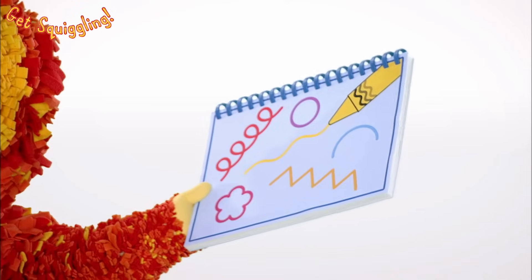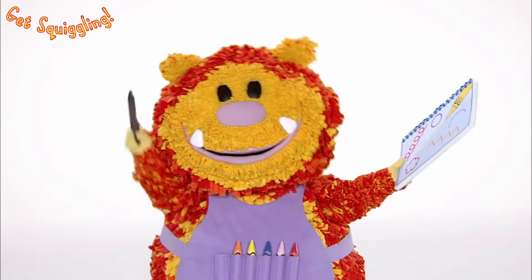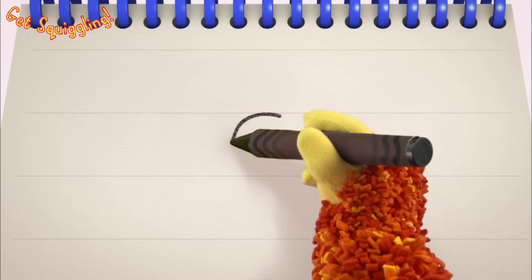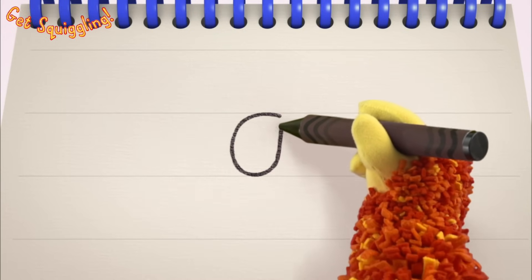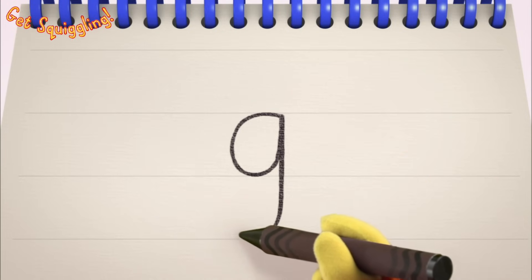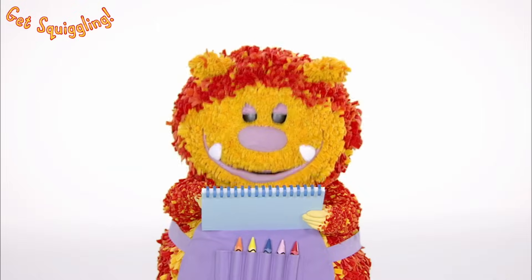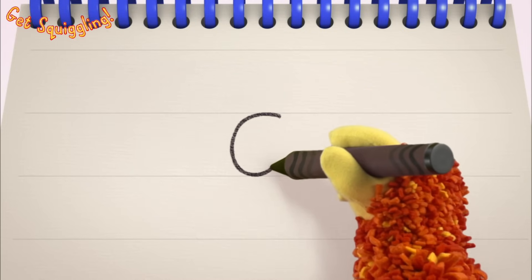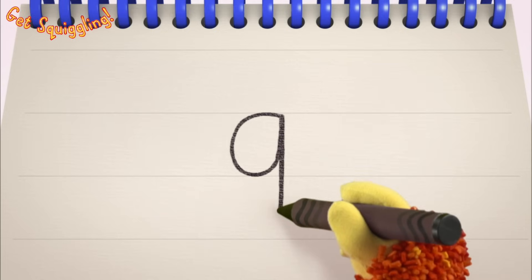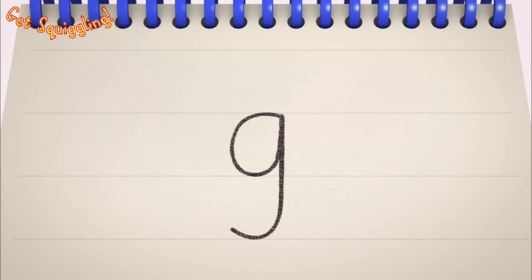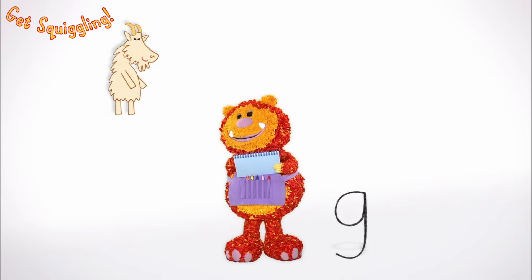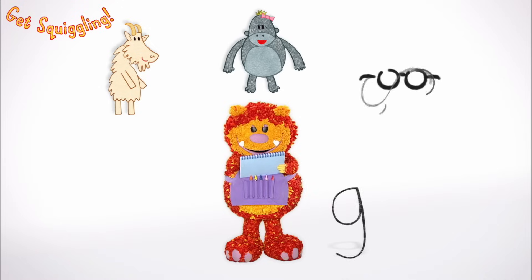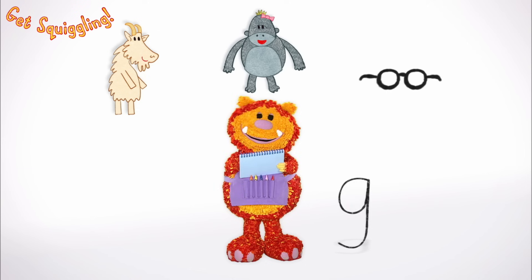Have you got your squiggle pads and squiggle sticks ready? Let's get squiggling! Holding your squiggle stick like this, move it round, up, down and across, then round, up, down and round — the letter G! Let's squiggle it again: go round, up, down and round — the letter G! Shall we squiggle some things that start with the letter G? A goat, a gorilla and glasses — they all begin with the letter G!